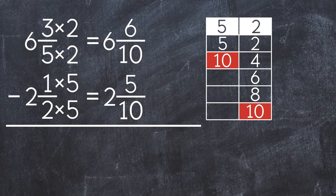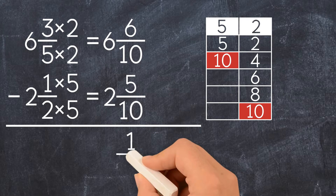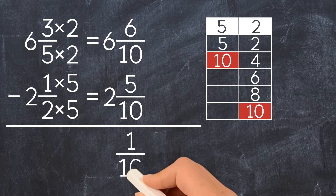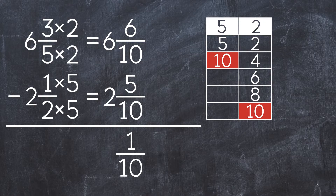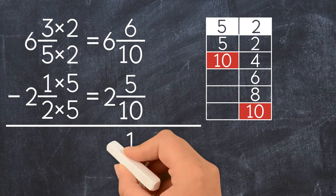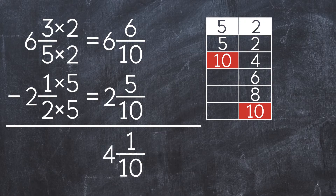Now we can subtract the mixed numbers. First, we subtract the fractions. We get 1 tenth. Next, we subtract the whole numbers: 6 minus 2 equals 4. So the final answer is 4 and 1 tenth.